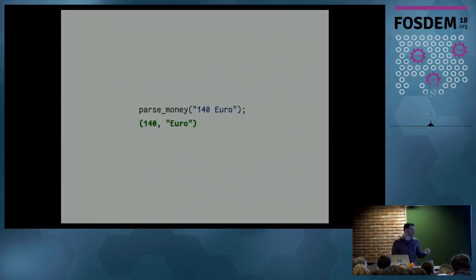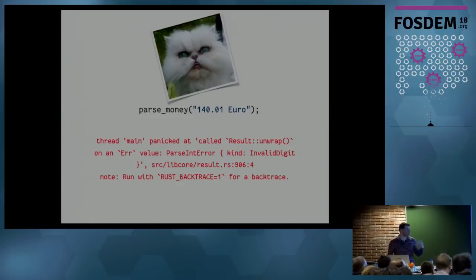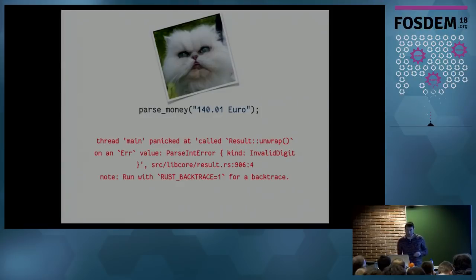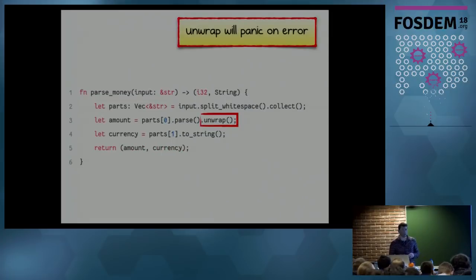So if we use this function to parse our money, we're done, right? Well, what if somebody tries to parse a sub-euro amount? Bad luck — you get a runtime panic, even though Rust is safe. You can't be saved from not declaring your intent. We get an error saying 'called `Result::unwrap()` on an `Err` value' with a `ParseIntError` invalid digit. Turns out we panic on that `unwrap`. I told you — but it's totally fine to use it.